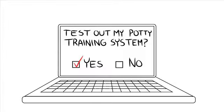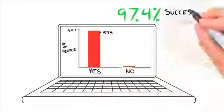I sent my newly acquired test subjects my potty training system to try out for seven days. After that time period had ended, I contacted each of them and asked if their son or daughter was successfully potty trained with absolutely no accidents. An impressive 533 out of 547 of the test parents responded with yes. That adds up to a 97.4% success rate.